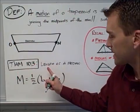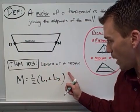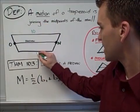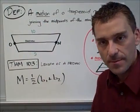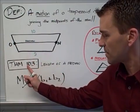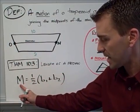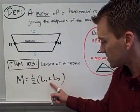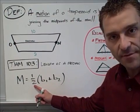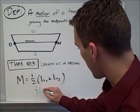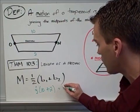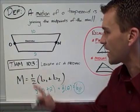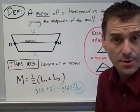Theorem 103 gives the length of the median. If M stands for the length of the median, the formula is M equals one-half times (B1 + B2) — half the sum of the two bases. For example, if B1 is 10 and B2 is 2, then M equals one-half times 12, which equals 6. So the length of that median is 6.